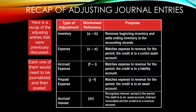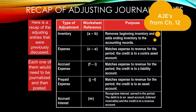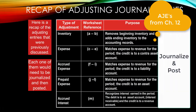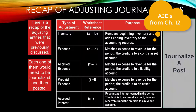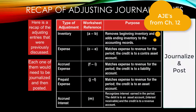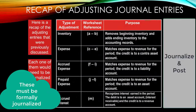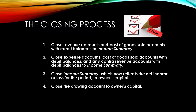In the last chapter we learned about all kinds of adjusting journal entries, summarized on this page. Remember that the worksheet was the internal tool we used to enter the adjustment data and give the owner a preview of the financial statements. In this chapter we've learned how to create the formal financial statements, and now the last part of the adjustment process is to journalize and post these to the journal and then post to the general ledger.